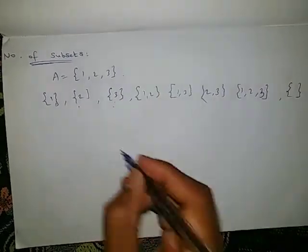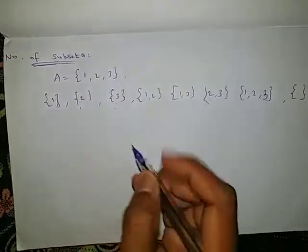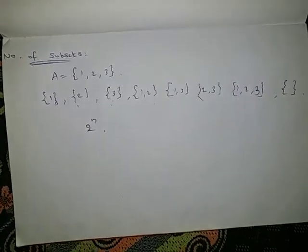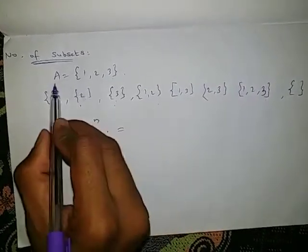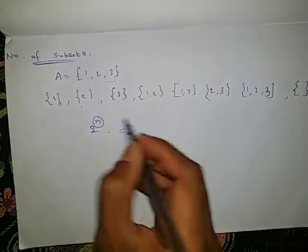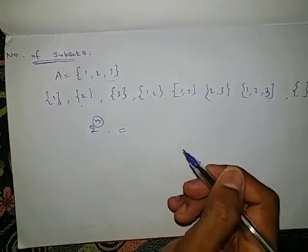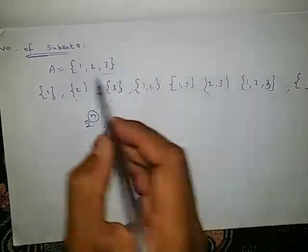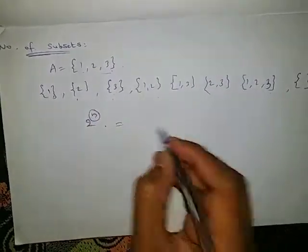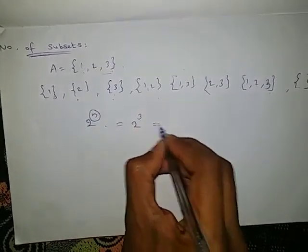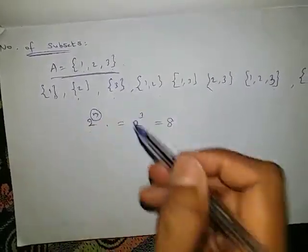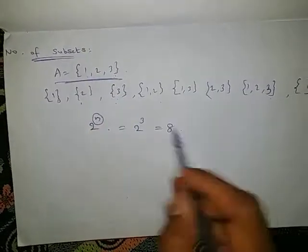Now, how many subsets will there be? The formula is 2 power n, where n is the number of elements in the set. This set has 3 elements, so 2 power 3 = 8. So for this set, if we write all the subsets there will be 8 of them.